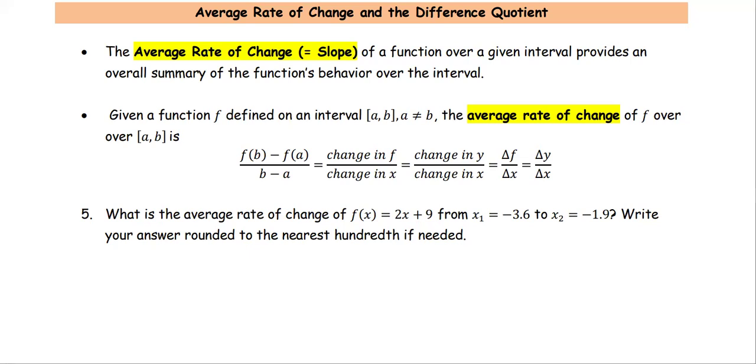The average rate of change and the difference quotient. The average rate of change, or the slope of a function over a given interval, provides an overall summary of the function's behavior over the interval. Given a function F defined on the interval AB,